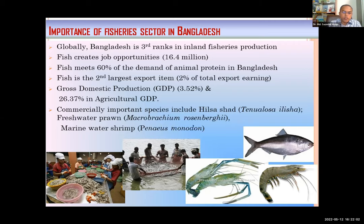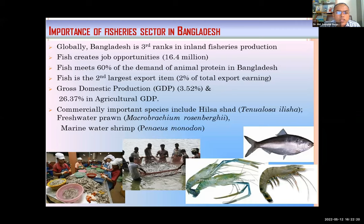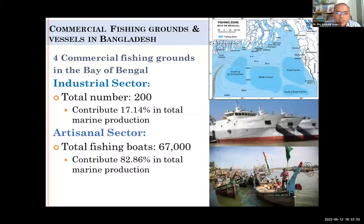Among fish and aquaculture, the commercially important species are Hilsha, freshwater prawn, and marine water shrimp. I will talk about how Hilsha — our national fish — is central to this context. Our artisanal or small-scale fishers in the coastal region are mainly Hilsha fishers. As background, our fishers operate from four commercial fishing grounds in the Bay of Bengal: South North Ground, South Pacific, Middle Ground, and East of Elephant Point.